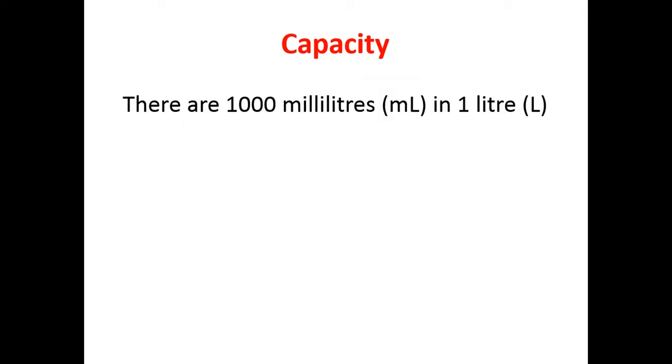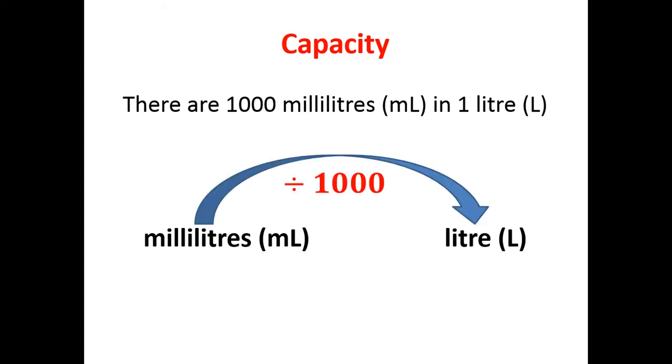You need to remember there are 1,000 milliliters in one litre. If we're changing milliliters into litres, we're going to divide by 1,000. And if we're changing litres back into milliliters, we're going to multiply by 1,000.